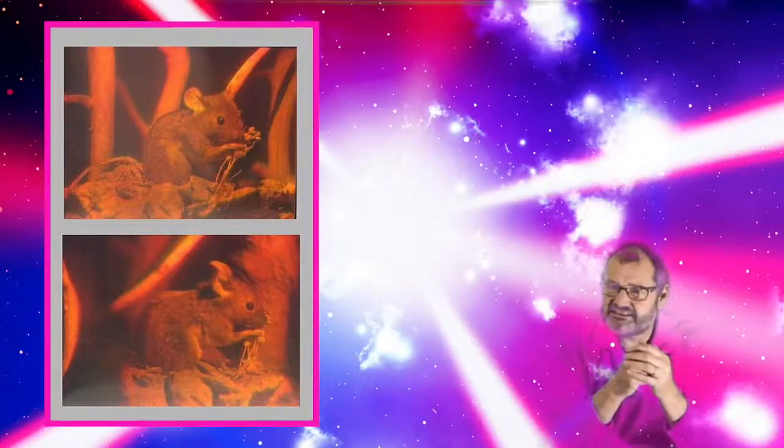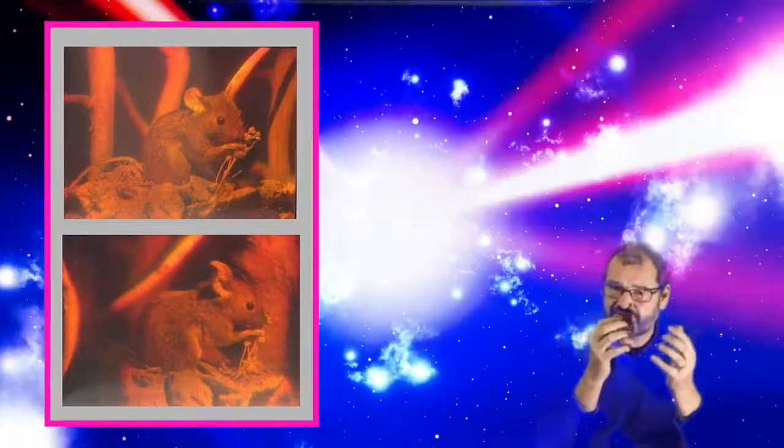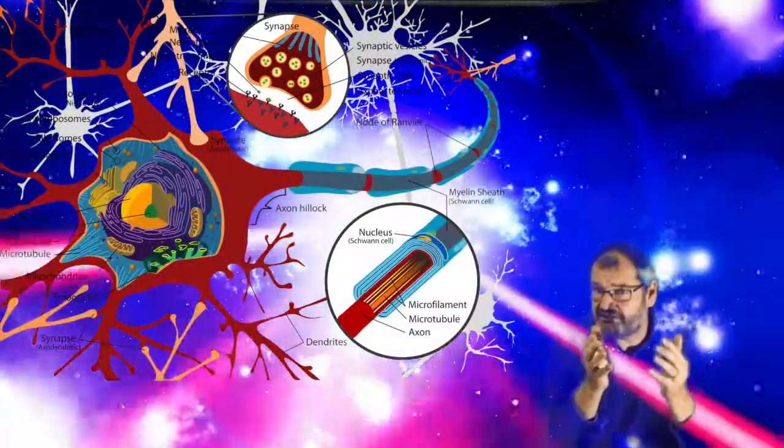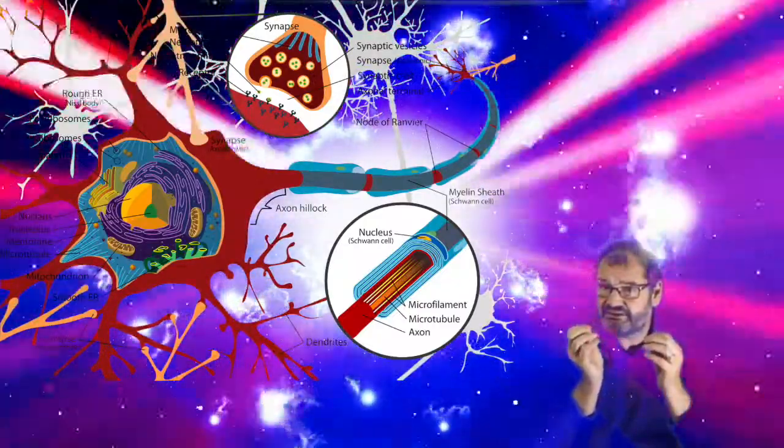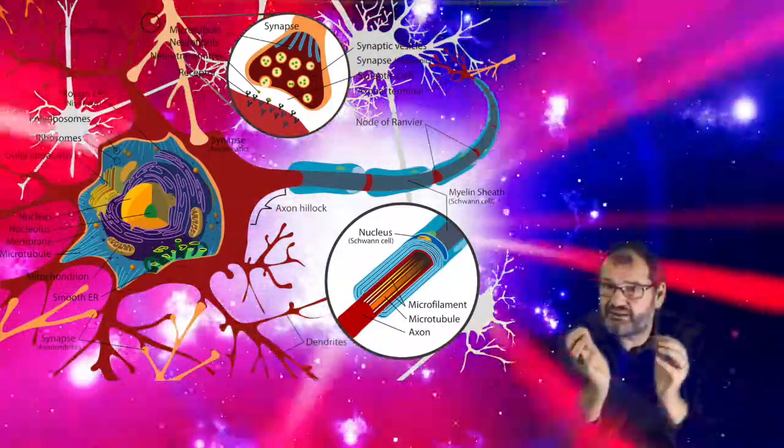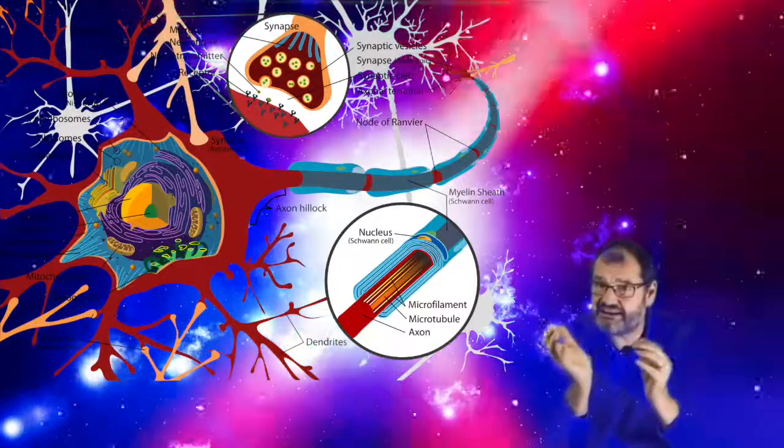In a hologram any part of the hologram with sufficient size contains the whole of the stored information. In this theory a piece of long-term memory is similarly distributed over a dendritic arbor so that each part of the dendritic network contains all the information stored over the entire network.